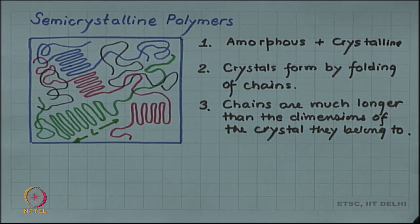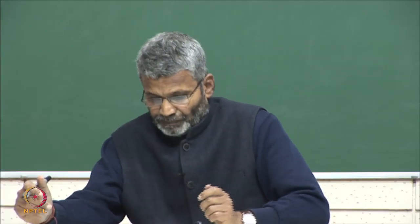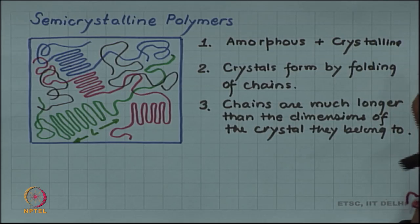This is a very important point historically as well, because this was a big issue when Staudinger proposed the macromolecule or long chains as the basic structure of polymers. When crystal structure was determined using X-ray diffraction, the unit cell size and the crystal size were found to be much smaller than the chain size. This led to the confusion of how long chains can fit in a small crystal. The folding mechanism was then proposed to explain long chains fitting into smaller unit cells or smaller crystals.